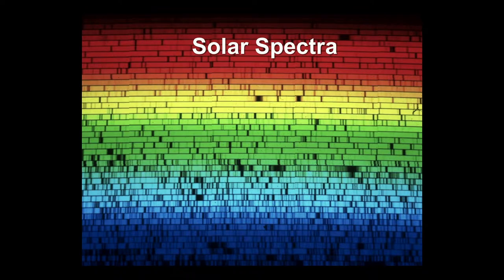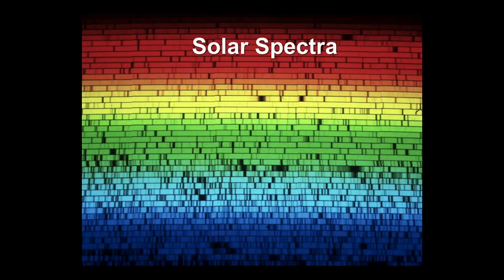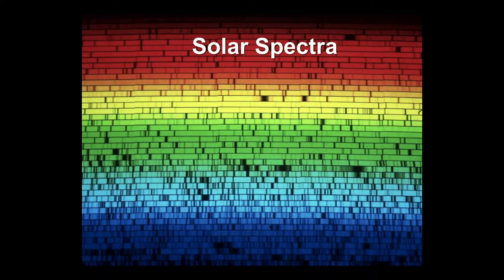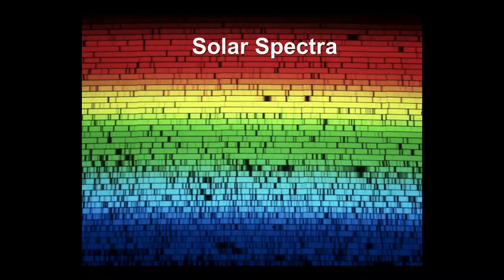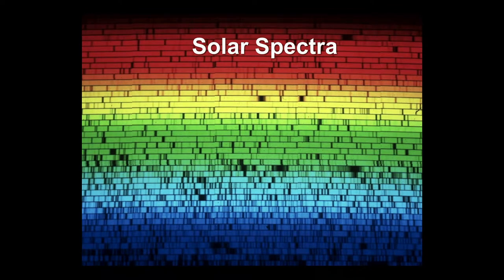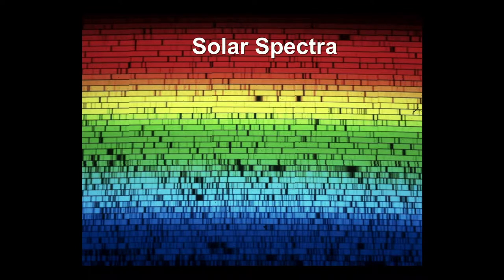The Doppler signatures are annoyingly small. In real life we're talking about motions of less than one one-hundredth of a pixel. From any one spectral line there's no way you could recognize that it shifted by less than one one-hundredth of a pixel. But we don't just have one spectral line — we have an entire spectrum, thousands of spectral lines. Some are nice clean ones, some are dirty with multiple lines blended together, and some are in regions with telluric variability. It's a challenging problem to convert these spectra into measurements of the star's velocity.